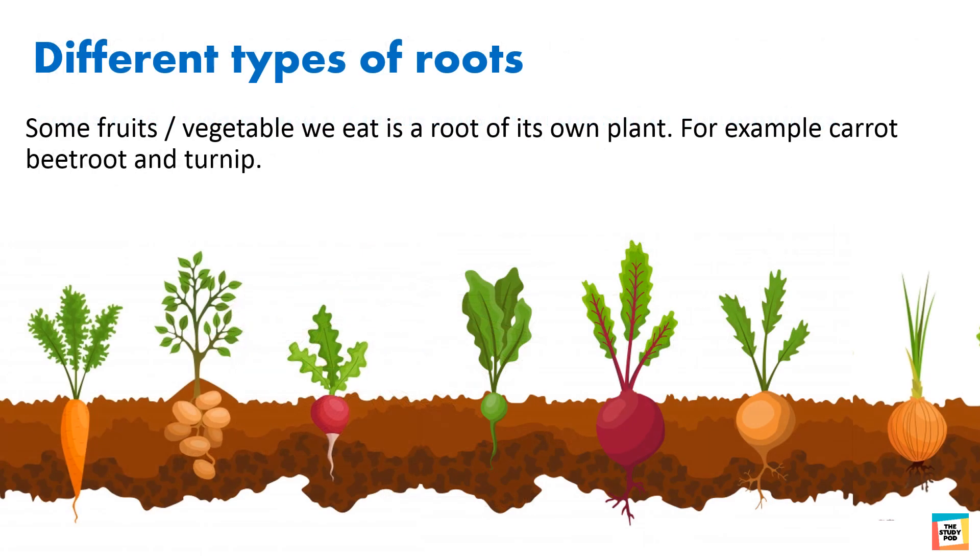Some fruits or vegetables we eat is a root of its own plant. For example, carrot, beetroot and turnip.